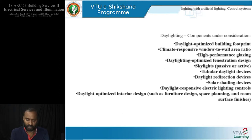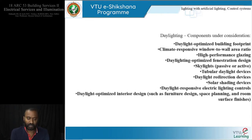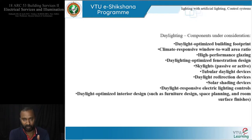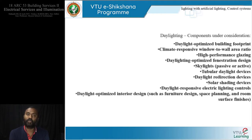The components include: daylight-optimized building footprint — supporting the optimal orientation; climatically responsive window-to-wall area ratio, which you must have studied in climatology in your third semester. The window needs a careful balance between admission of daylight and heat gains or losses. High performance glazing: when we say a window is glazed, it is not just about glass — there are many categories, types, and values involved. High performance glazing admits more light and relatively less heat. The fourth component is daylighting-optimized fenestration design.